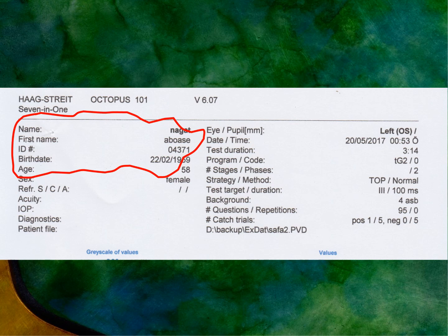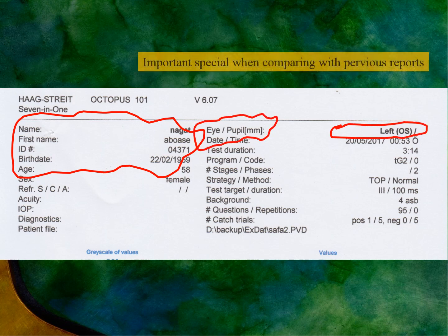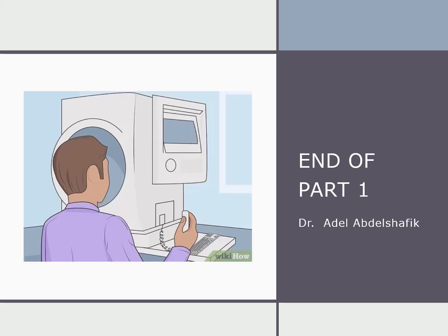In the case of the Octopus, we again need to check the patient's name, ID, date of birth, and age, as well as which eye is being tested and the pupil diameter. This is especially important when comparing follow-up fields.